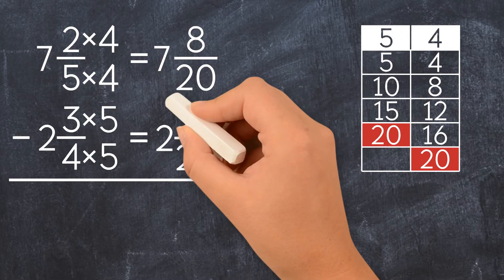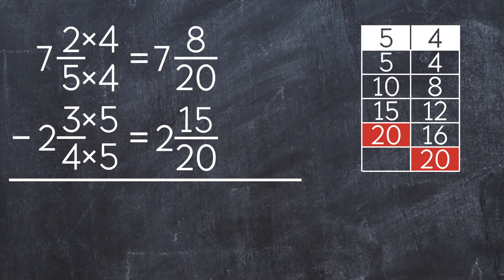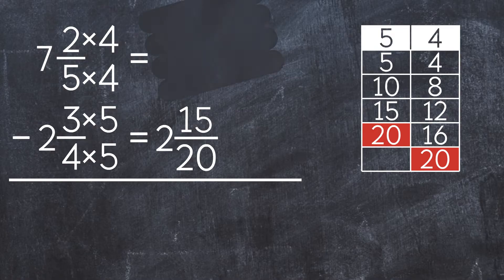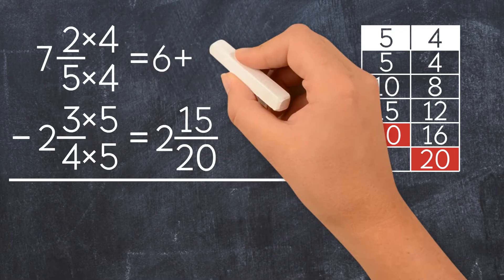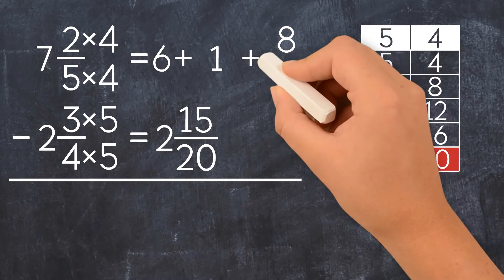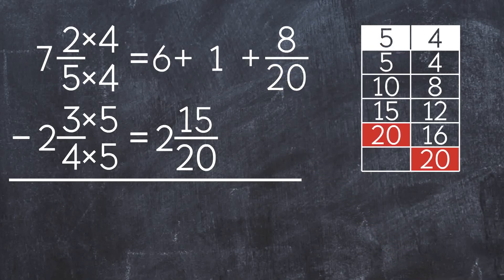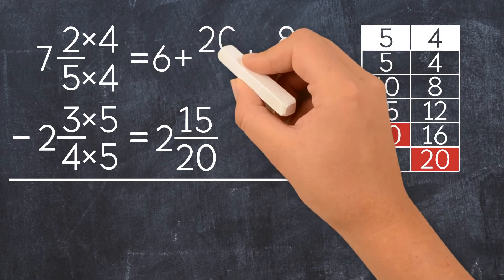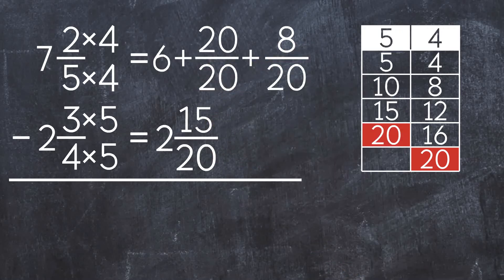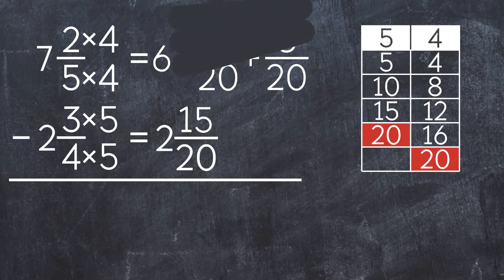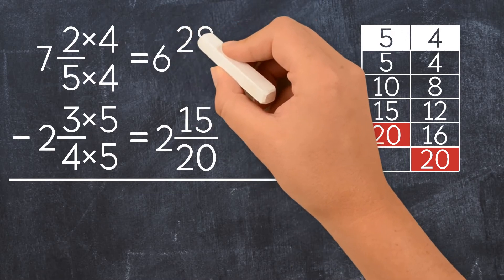We can't subtract 15 twentieths from 8 twentieths, because 8 twentieths is less than 15 twentieths. So we have to rename the first mixed number as a mixed number with a fraction greater than 1. Instead of 7 and 8 twentieths, we can write 6 plus 1 plus 8 twentieths. And now, instead of 1, we can write 20 over 20.